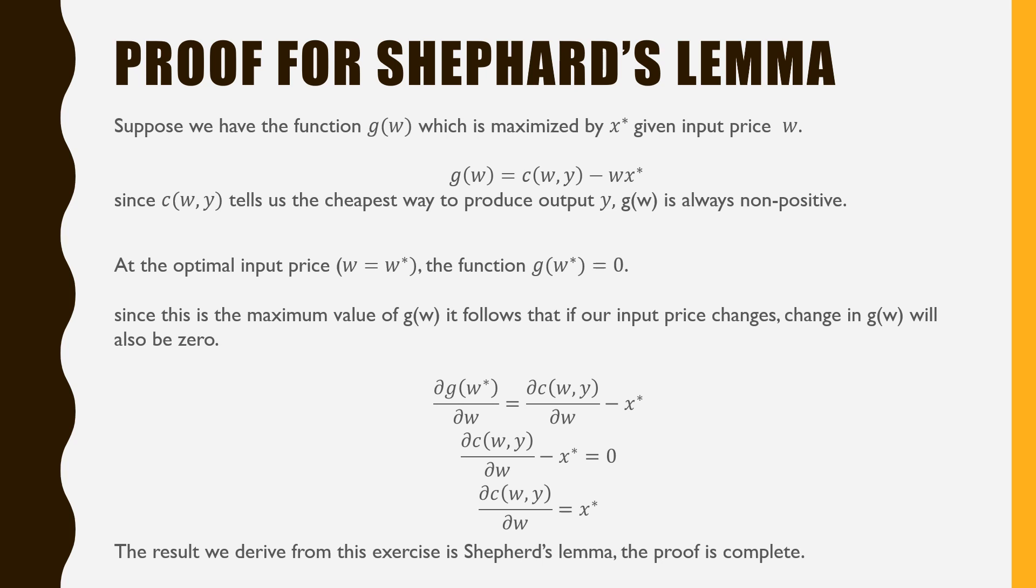Since this is the maximum value of g of w, it follows that if our input price changes, change in g of w will also be 0. We can confirm this by taking the derivative of g of w with respect to w and rearranging it. The result that we derive is Shephard's Lemma, thus the proof is complete.